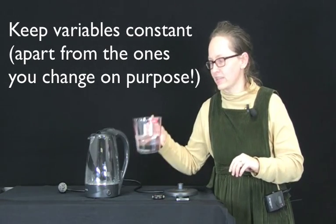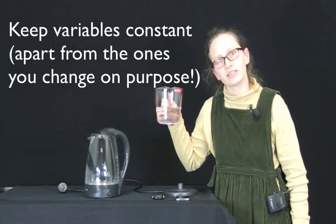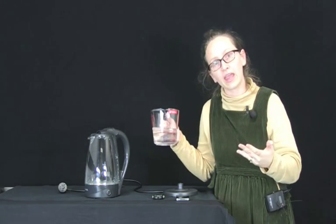We want all the other variables to remain constant. So variables such as the initial temperature of the water need to be kept constant. One way to keep the initial temperature of the water constant is to perform this investigation in one day. If it's all performed in the same day, then we can assume that the surrounding temperature isn't changing very much and so the water is coming out of the tap all at the same temperature.